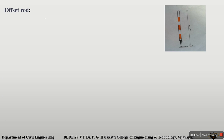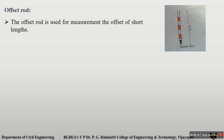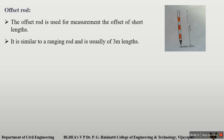The next one is the offset rod. It is similar to the ranging rod but is available in 2 to 3 meters. The main use of the offset rod is for measuring perpendicular offsets for shorter lengths.